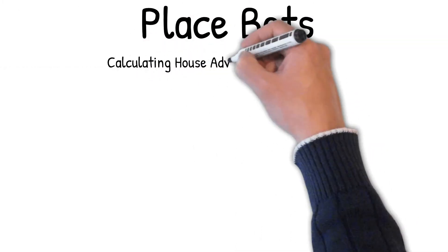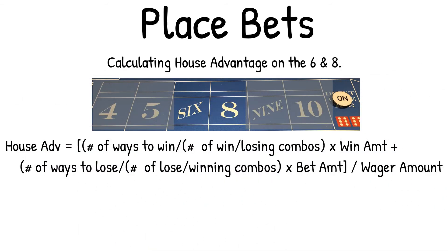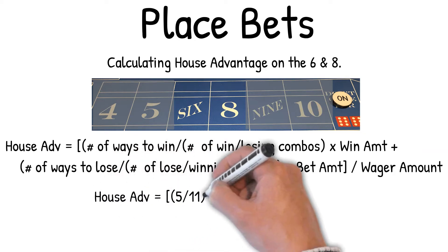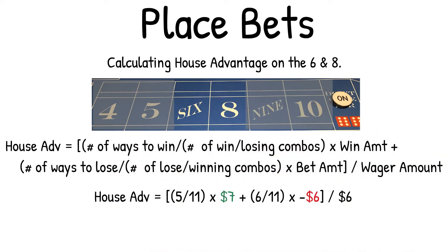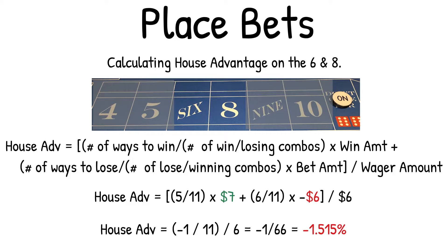Calculating house advantage on the six and eight. House advantage equals the number of ways to win over the number of ways to win-lose combos, times the win amount, plus the number of ways to lose over the number of lose-win combos, times the bet amount, over the wager amount. So the house advantage on the six and eight equals: 5/11 × $7 + 6/11 × (−$6), over $6. This equals (1 − 1/11) / 6, reduced to −1/66, which equals −1.5515% house advantage.